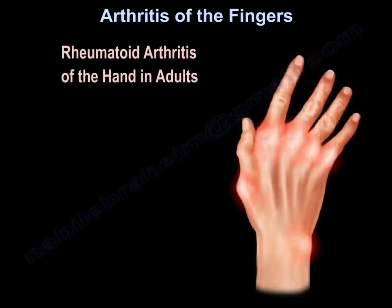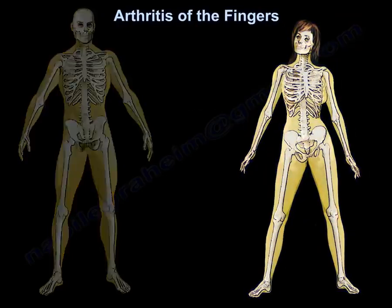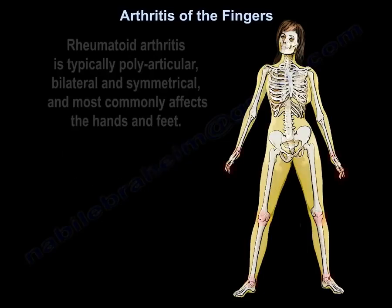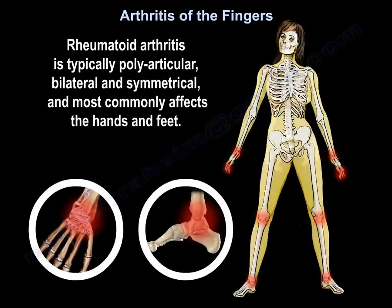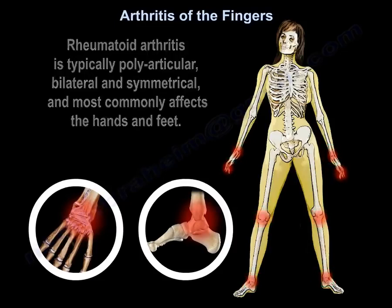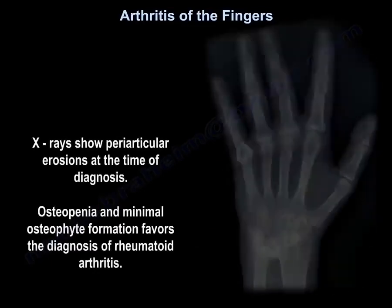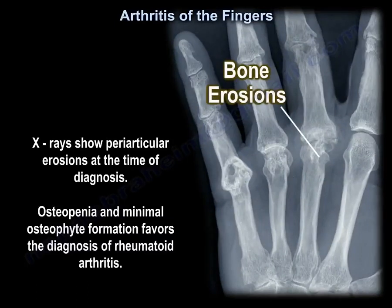Rheumatoid arthritis of the hand occurs more in females than in males. It has spontaneous remissions and exacerbations, and the disease can have a systemic nature. Rheumatoid arthritis is typically polyarticular, bilateral, and symmetrical, most commonly affecting the hands and feet. The patient complains of pain and morning stiffness. X-ray will show periarticular erosions at the time of diagnosis; osteopenia and minimal osteophyte formation favor the diagnosis.